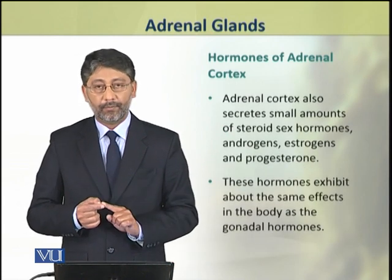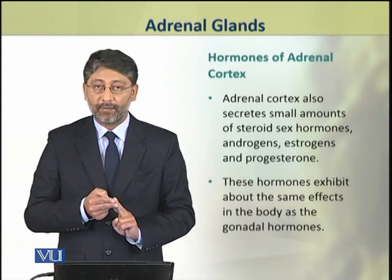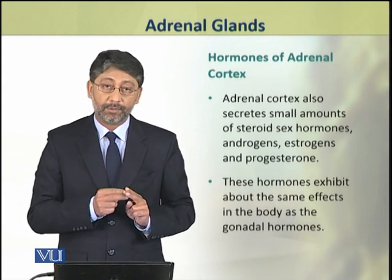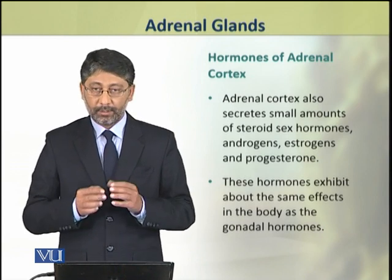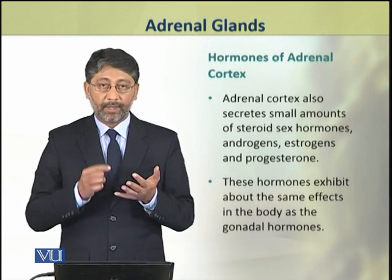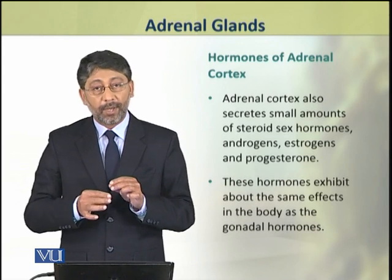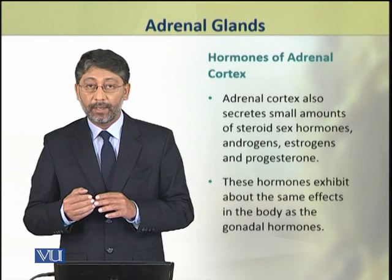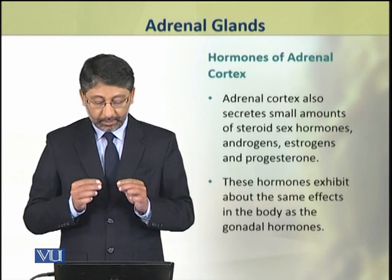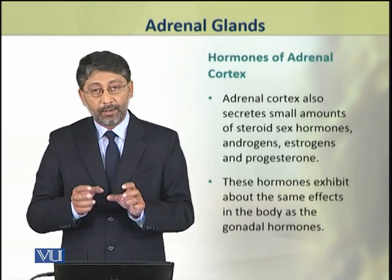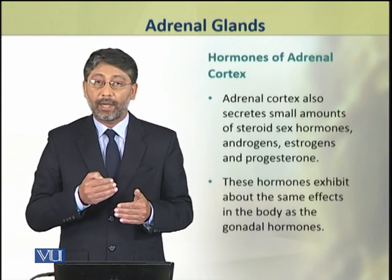Dear students, in addition to the two types of steroid hormones, a third group of steroid hormones is also produced by the adrenal cortex — the steroid sex hormones. These are androgens, estrogens, and progesterone. These hormones are mainly produced by the gonads, but the adrenal cortex also produces them in small amounts. The sex hormones produced here have similar effects to the gonadal hormones.